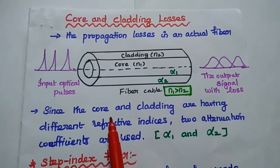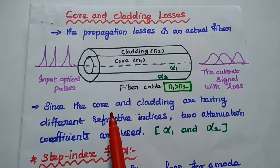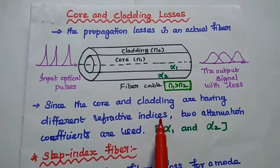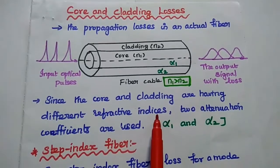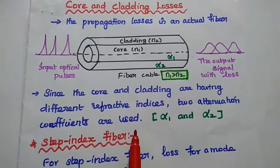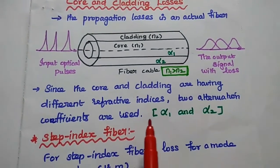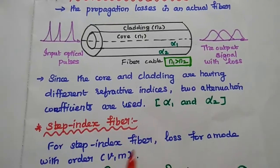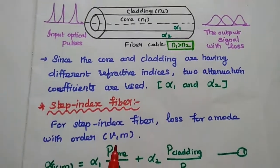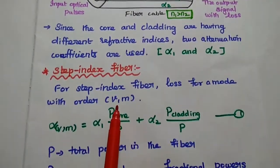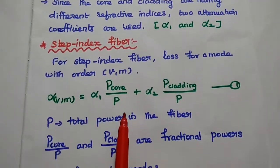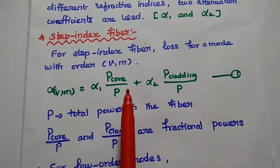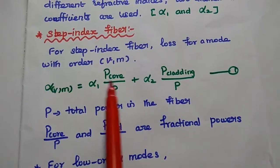Since the core and cladding have different refractive indexes, there are two attenuation coefficients used to represent the losses: alpha1 and alpha2. Next, we are going to analyze the core and cladding losses for step index fiber in detail.